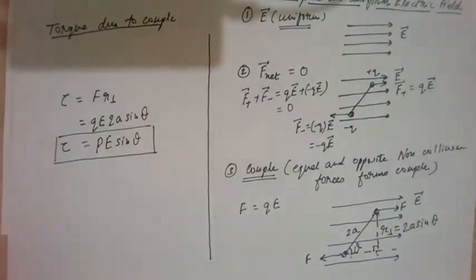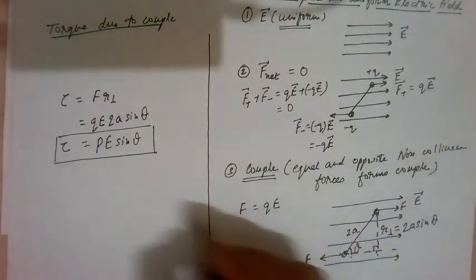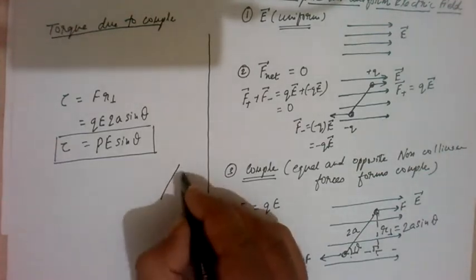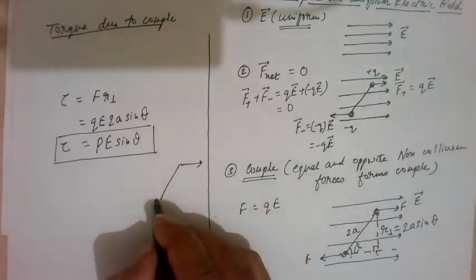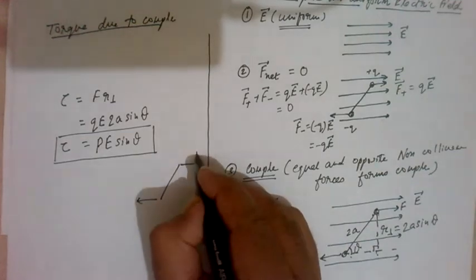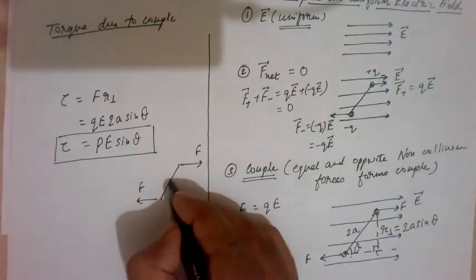Now, we know that torque is a vector quantity. It must have direction. So let us see in which direction it will rotate. So if you see this dipole, the force on this positive charge and force on this negative charge, this is the center of dipole. It will turn like this.